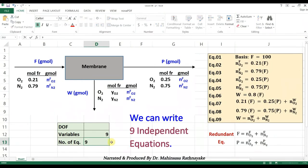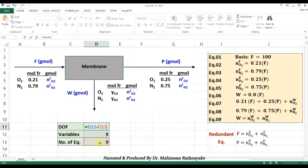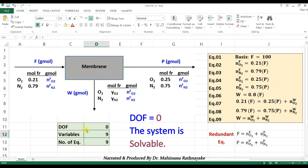And we can write the equations as you can see on the screen now. So we can see that we can write 9 independent equations for this system. So the degrees of freedom is 0. That means this problem is solvable. Please note that the equations oxygen mole flow in the feed plus nitrogen mole flow in the feed equals capital F, and oxygen mole flow in the product plus nitrogen mole flow in the product equals P are redundant equations because there are given data on those two streams.